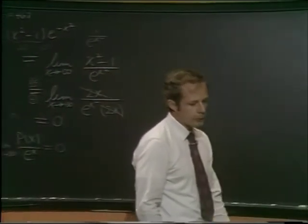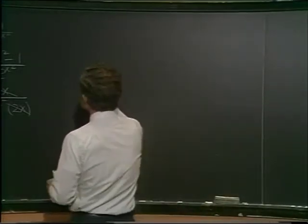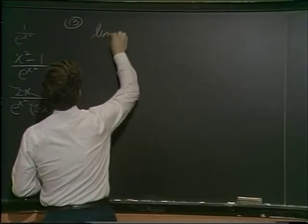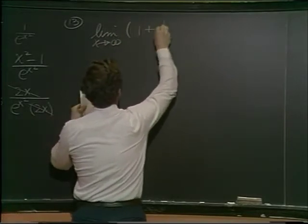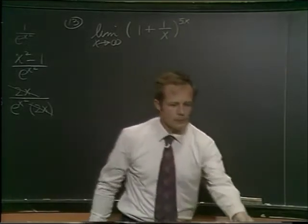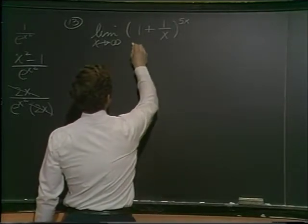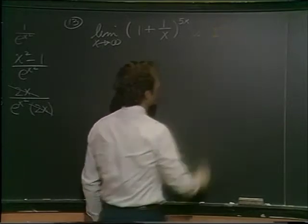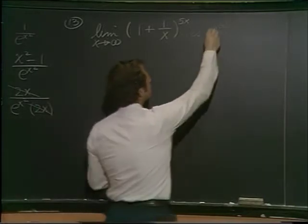The other problem dealt with another form, which was a 1 to the infinity type. This is problem 13. Again, x goes to infinity. And what we're looking at is 1 plus 1 over x raised to the 5x power. OK, that's a classic problem, because it really bothers one's intuition, if you haven't done many of these. It's a 1 to the infinity form.